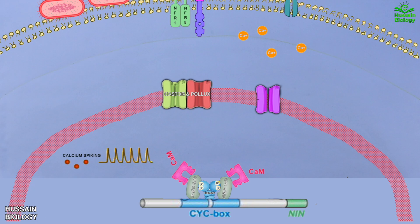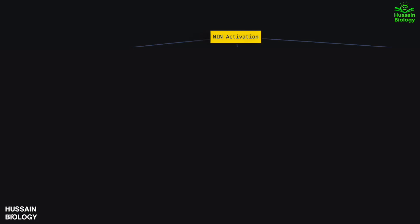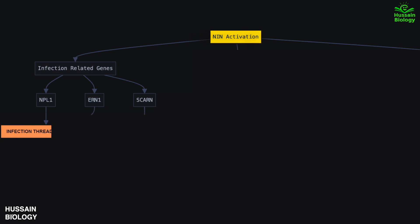Binding the CYC box drives transcription of the master regulatory gene NIN — Nodule Inception. NIN is the master regulator of nodulation and activates a plethora of genes. First, NIN drives transcription of infection-related genes including NPL1, ERN1, and SCORN. NPL1 and ERN1 drive infection thread formation, whereas SCORN drives actin rearrangement for infection.